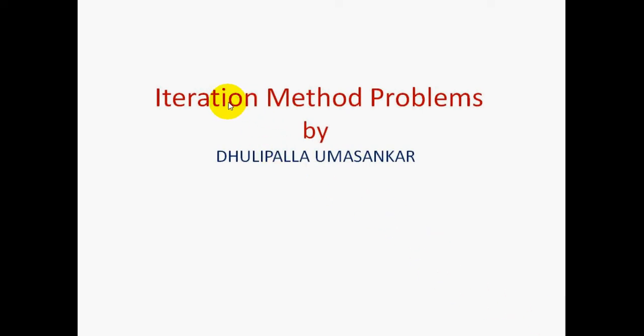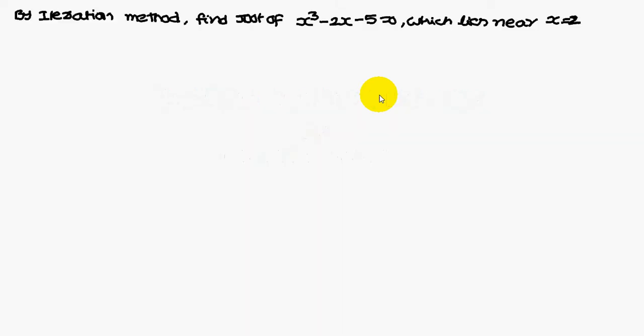Today, we are going to discuss iteration method problems. By iteration method, find the root of x² minus 2x minus 5 equals 0, which lies near x equals 0.